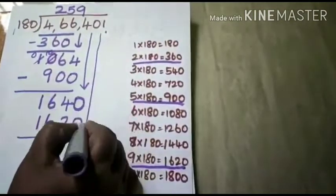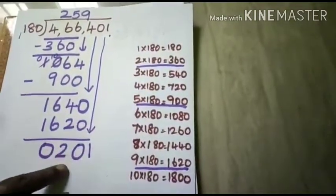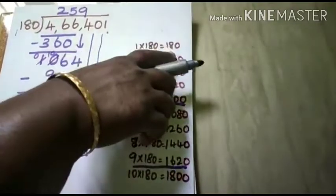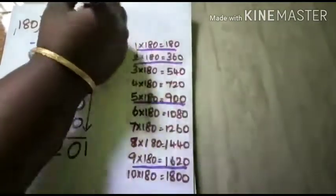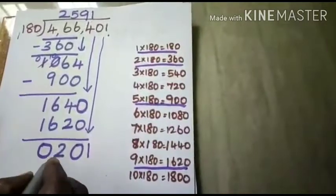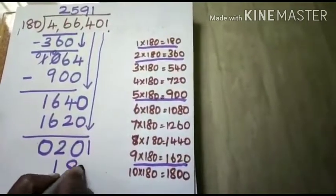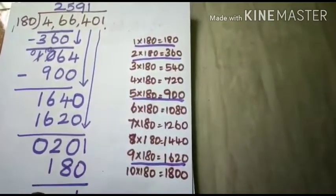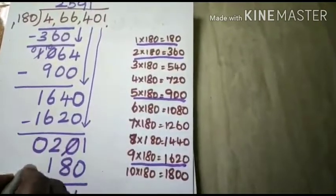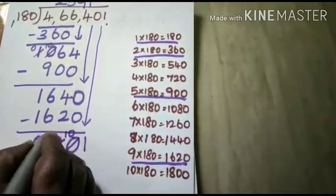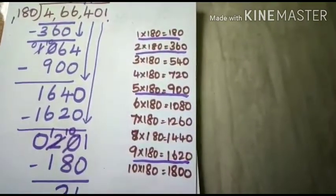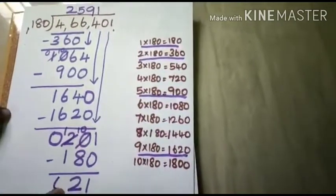Now bring down the last number 1. How many times does it come before 360? So one time. 1 into 180 is 180. Subtract. Here you will be getting 10. 10 minus 8 is 2, and 1 minus 1 is 0.